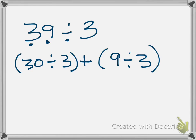And so then I go back and I divide each, 30 divided by 3 is 10, plus 9 divided by 3, which is 3, still gives me a quotient of 13.